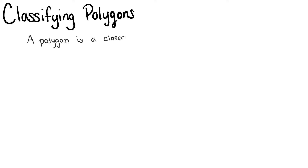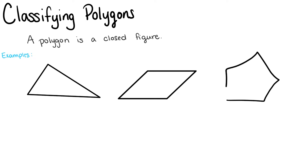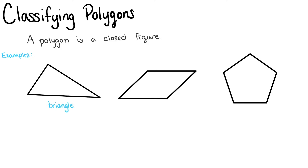A polygon is a closed figure. For example, we have a triangle which is three sides, a quadrilateral which has four sides, and a pentagon which has five sides. So anything that's five or more, we simply can call a polygon.